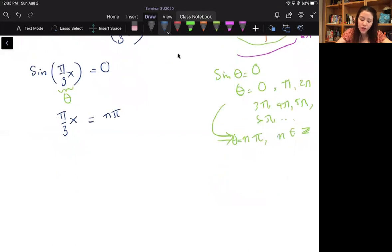Well, what does x equal? I'm going to multiply both sides by 3 over π. So my left-hand side, 3 cancel, π and π cancel. I get just x equals 3n. And that is your solution.